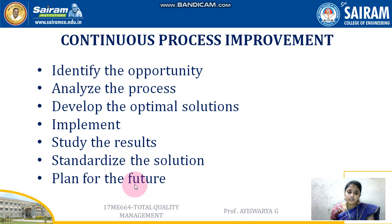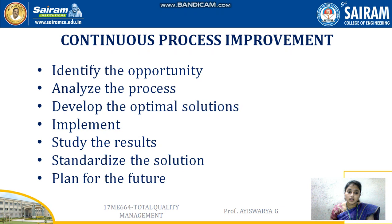We had seen those things in our second module on continuous process improvement. After identifying the issues, we need to identify the opportunity to solve those issues received from our previous product. We need to analyze the actual process of the issues, develop the optimal solution, and implement it in the company. Finally, we need to study the results, standardize the solution, and plan for the future. These are the steps we continually need to follow for improving the quality process in our company.